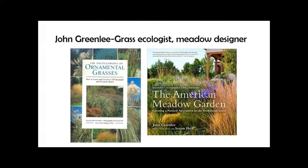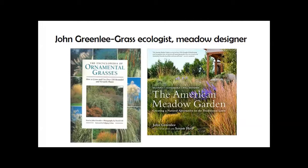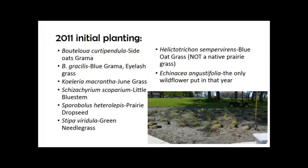The NDSU garden started after a seminar by John Greenlee, a California-based grass ecologist and meadow designer, in January 2011. His book 'The American Meadow Garden' and 'Encyclopedia of Ornamental Grasses' are good references. Initially, mostly grasses were planted: Bouteloua curtipendula and gracilis (sideoats and blue grama), Calamagrostis macrantha, June grass, little bluestems (Schizachyrium scoparium), Sporobolus heterolepsis (prairie dropseed), Stipa viridula (green needle grass), and Helictotrichon (blue oat grass), the only non-native.